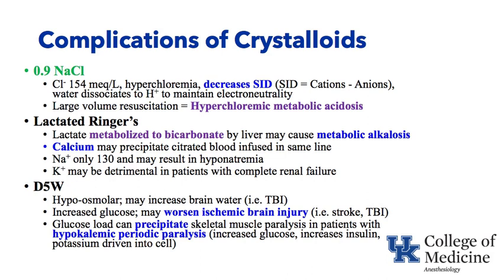D5W is hypoosmolar and can actually increase brain water in someone with traumatic brain injury — we don't want hypoosmolar solutions given to someone with cerebral edema. Glucose in D5W, if administered to a patient with traumatic brain injury or stroke, can worsen ischemic brain injury, as hyperglycemia at the time of ischemic brain injury worsens the lesion. Additionally, glucose given to a patient with the rare disease hypokalemic periodic paralysis can precipitate skeletal muscle paralysis: glucose triggers insulin release, which drives potassium into cells, dropping potassium levels and triggering paralysis.